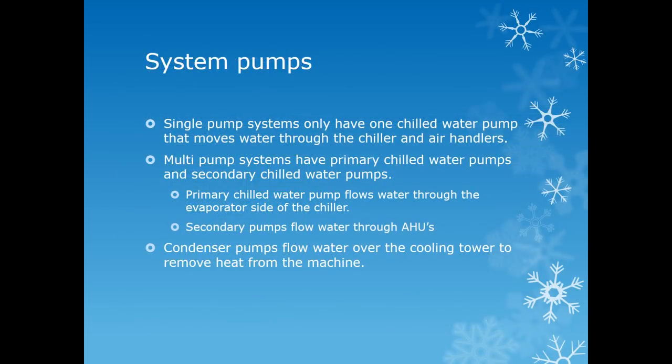Single pump systems only have one chilled water pump that moves water through the chiller and the air handlers. Multi-pump systems have primary chilled water pumps and secondary chilled water pumps. The primary chilled water pumps provide flow through the evaporator side of the chiller. The secondary chilled water pumps pull the water from the primary loop and distribute that water to the air handlers. The condenser pumps flow the water over the cooling tower to remove the heat from the machine.